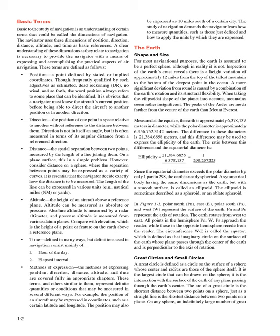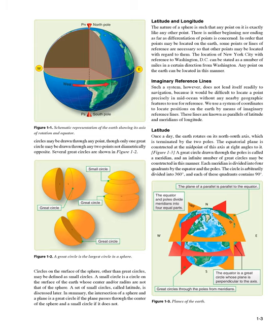Great Circles and Small Circles. A great circle is defined as a circle on the surface of a sphere whose center and radius are those of the sphere itself. It is the largest circle that can be drawn on the sphere, and its arc is the shortest distance between two points on a sphere, just as a straight line is the shortest distance between two points on a plane. Only one great circle may be drawn through any two points not diametrically opposite. A small circle is a circle on the surface of the earth whose center and/or radius are not that of the sphere. The intersection of a sphere and a plane is a great circle if the plane passes through the center of the sphere, and a small circle if it does not.